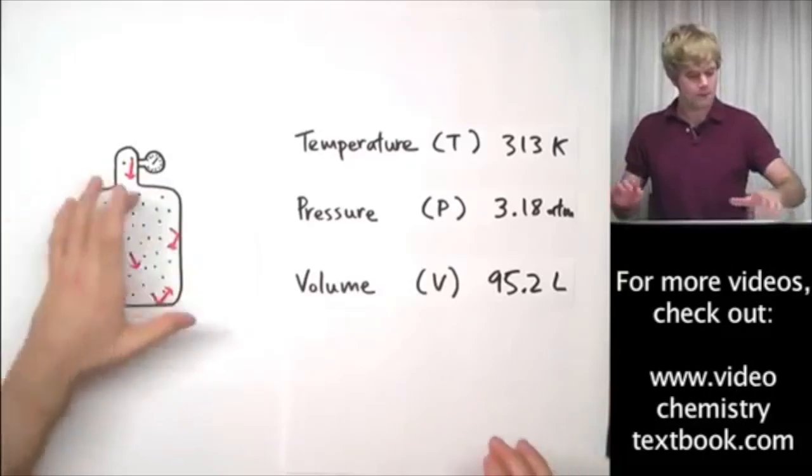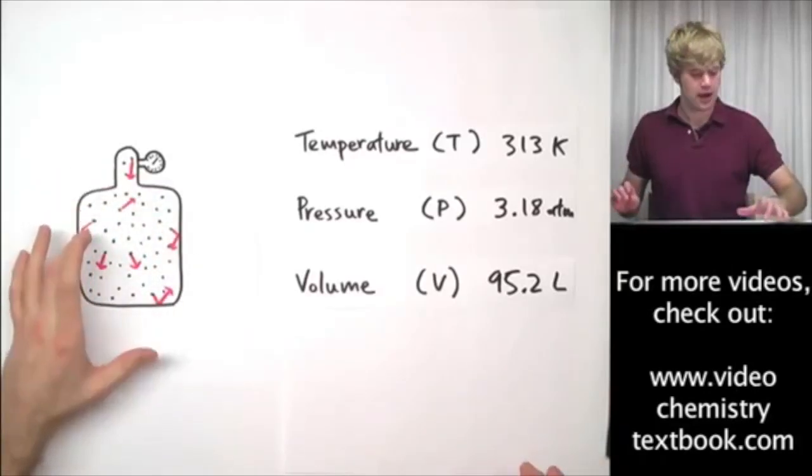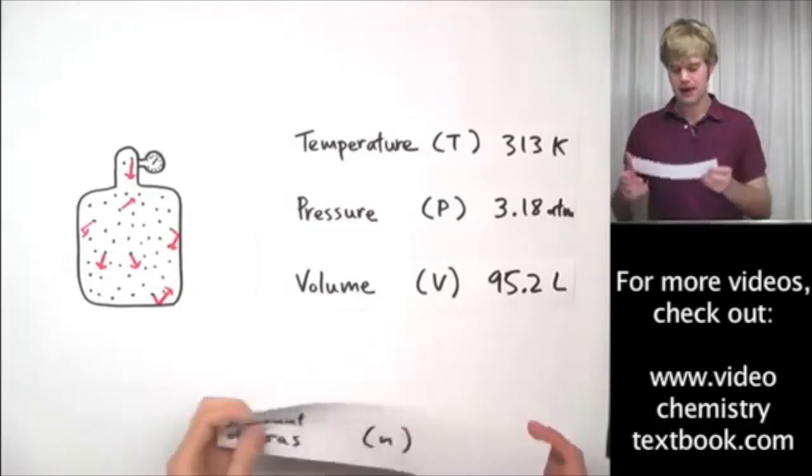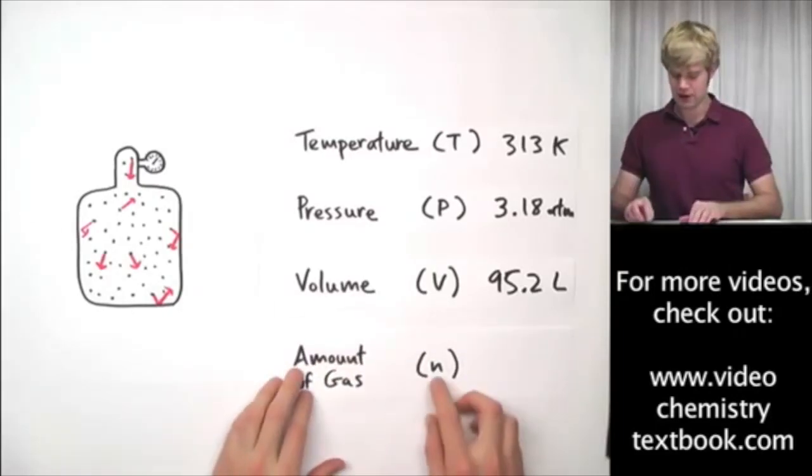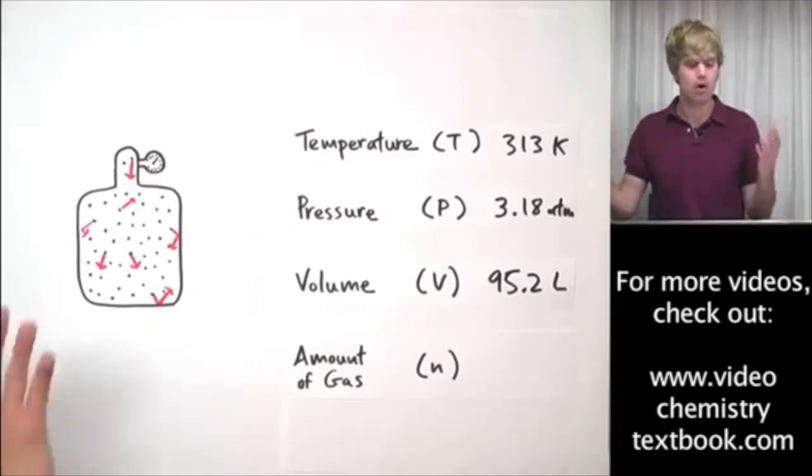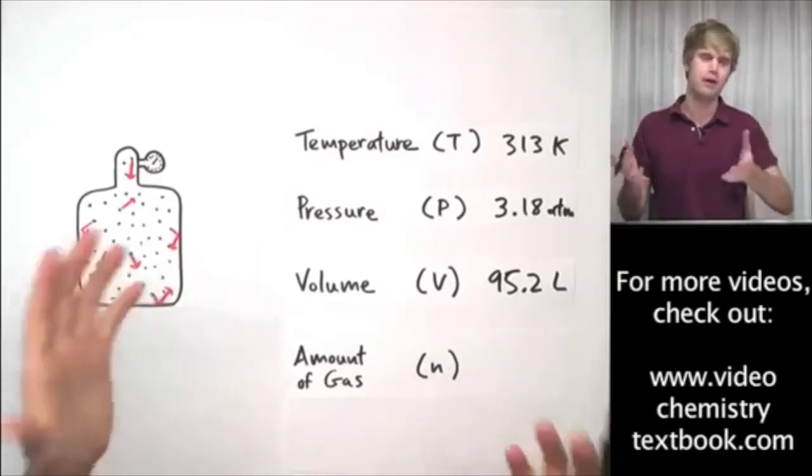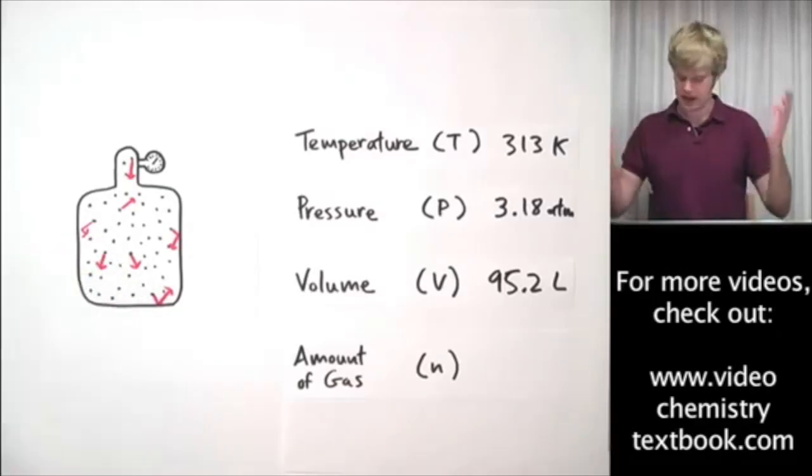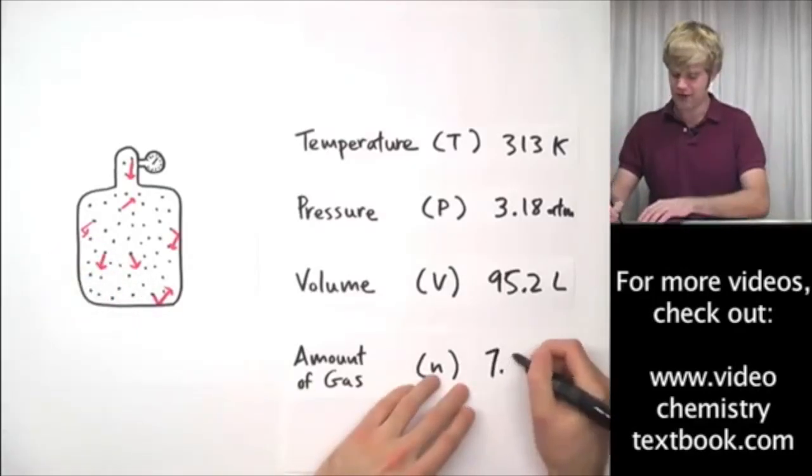And finally, look at these particles that I've drawn. There's a certain amount of gas that's in here. And the amount of gas, which is abbreviated by the letter N, is usually reported in moles, which is a convenient measure of how much of something we have. So we could say that the amount of gas in this tank is, I don't know, 7.5 moles.